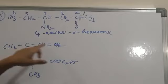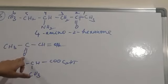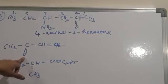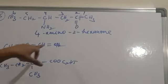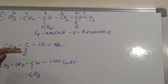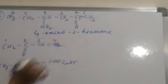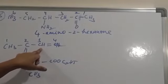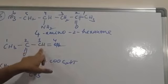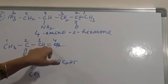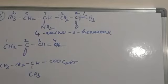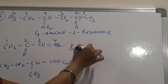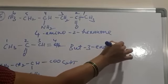Next: 4 carbons. Main functional group is the ketone functional group, and unsaturation is also there. Numbering starts from the main functional group end: 1, 2, 3, 4. Ketone is at second position and unsaturation is at third position. Root word is but, so the name is but-3-en-2-one.